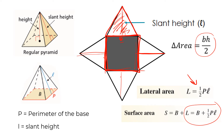You can rewrite the lateral area formula as: perimeter times slant height divided by two. Slant height is represented by the cursive L. So the perimeter of your base times the slant height (cursive L) divided by two gives you the lateral area. In the surface area formula, we take that lateral area and add the area of the base, denoted as B, since that base could be any shape.